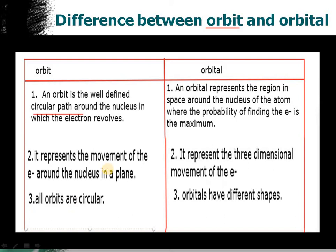Orbit represents the movement of electron around the nucleus in a plane. It is a plane, but orbital represents the movement of electron in a three-dimensional space.